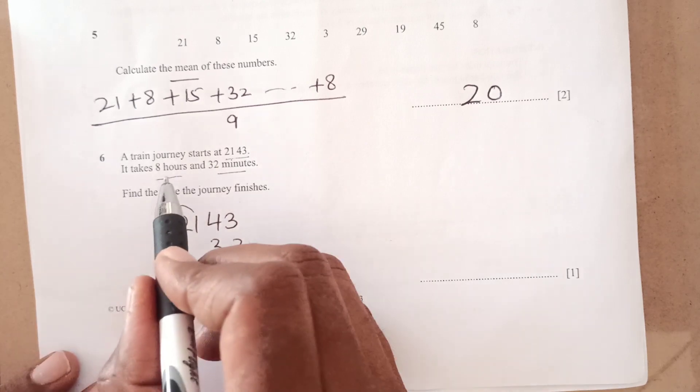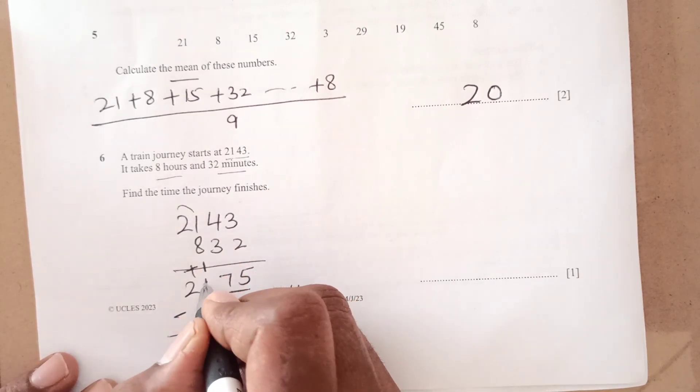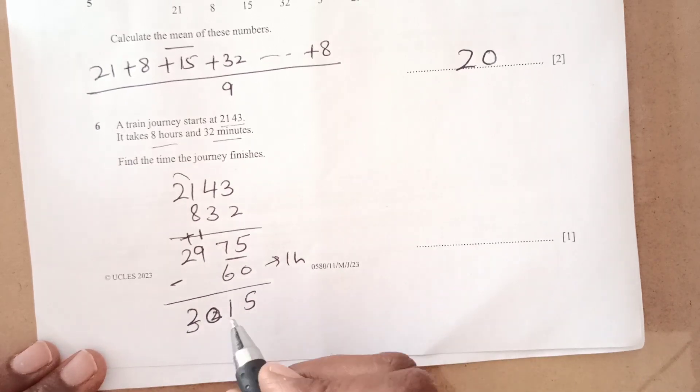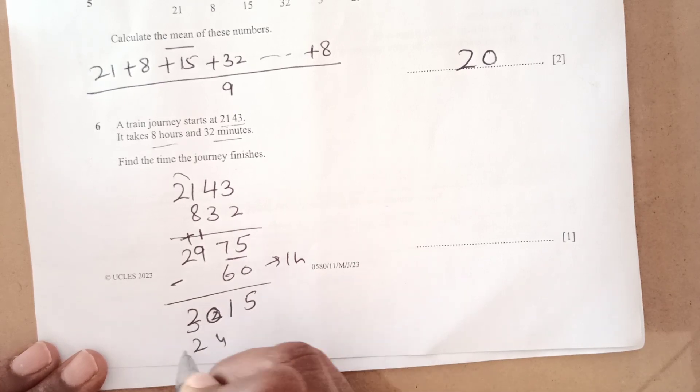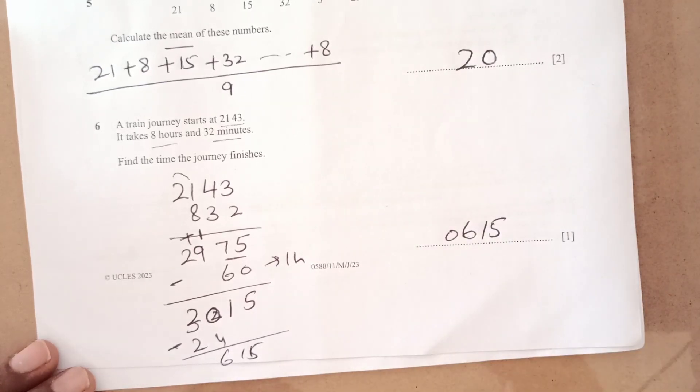Sorry, I just missed this 8 hours here. So there are 8 hours also. So this will become 29 here. So now we are going to add one more. This will become here 3015. Now, we have to subtract it right in 24 hours. So just subtract the 24 hours. So this is going to be 615.